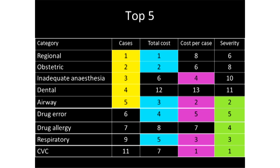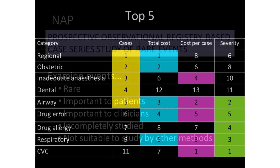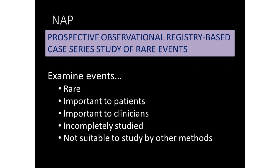Dental claims I'll largely ignore as they're less important. You can look at litigation by frequency of episodes, overall cost, cost per case, or severity. When you look at severity, drug allergy, drug error, and airway problems come into it much more importantly because these are big events. So that's a background to the safety of anaesthesia, what patients want, what clinicians are worried about, and what the litigation shows us.